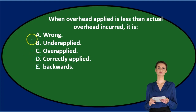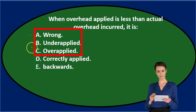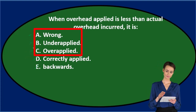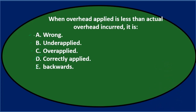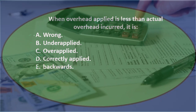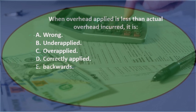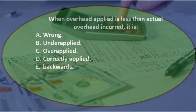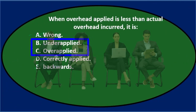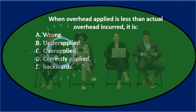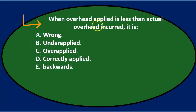Between A, B, and C, B and C should sound the most familiar. A — 'wrong' — is in a sense wrong, but it's an estimate, and an estimate isn't wrong just because it's an estimate; it's always going to differ from actual. So B and C are really the correct candidates — the rest are fillers. When overhead applied is less than actual overhead incurred, we underapplied the overhead.